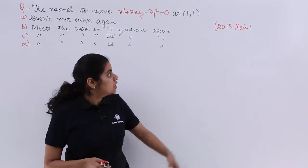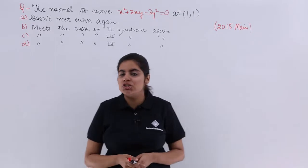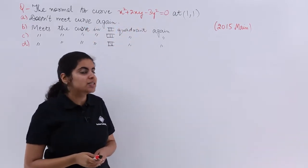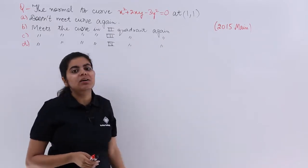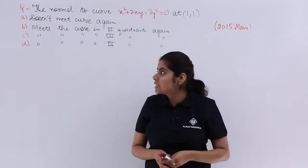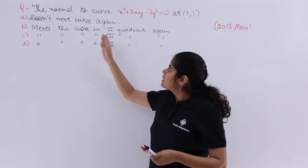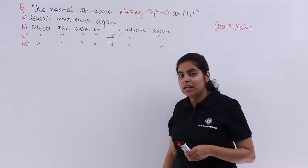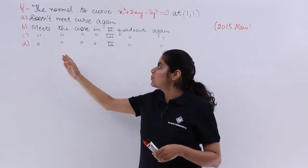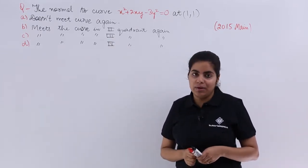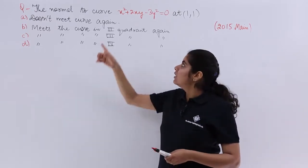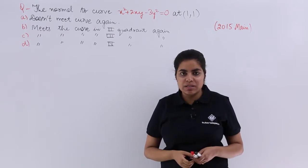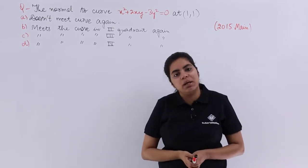The question was asked in the JEE 2015 main examination and it says: the normal to the curve x² + 2xy − 3y² = 0 at point (1, 1). Then four options are given: doesn't meet the curve again; meets the curve in the second quadrant again; meets the curve in the third quadrant again; and meets the curve in the fourth quadrant again.